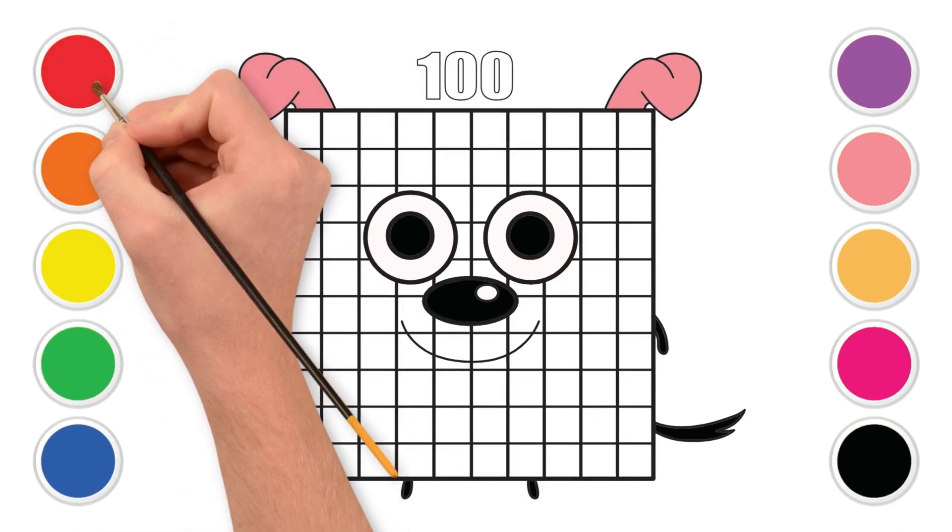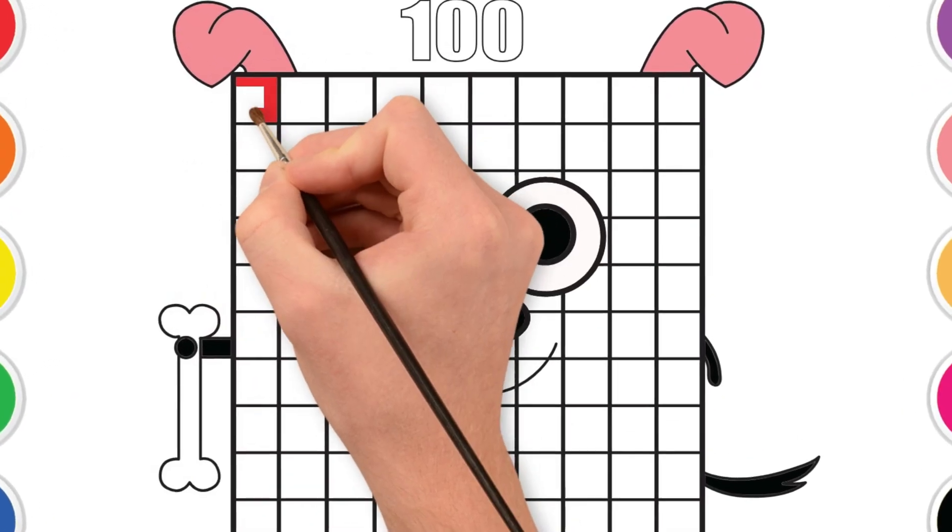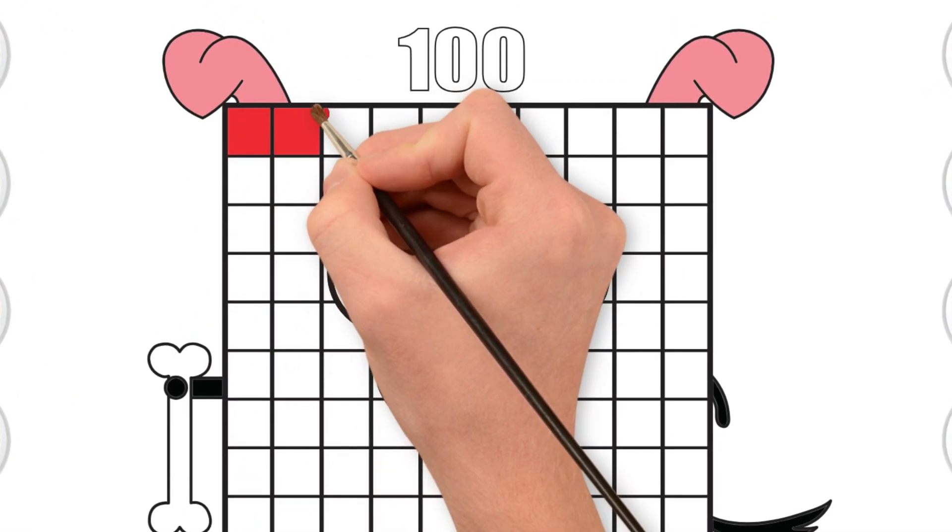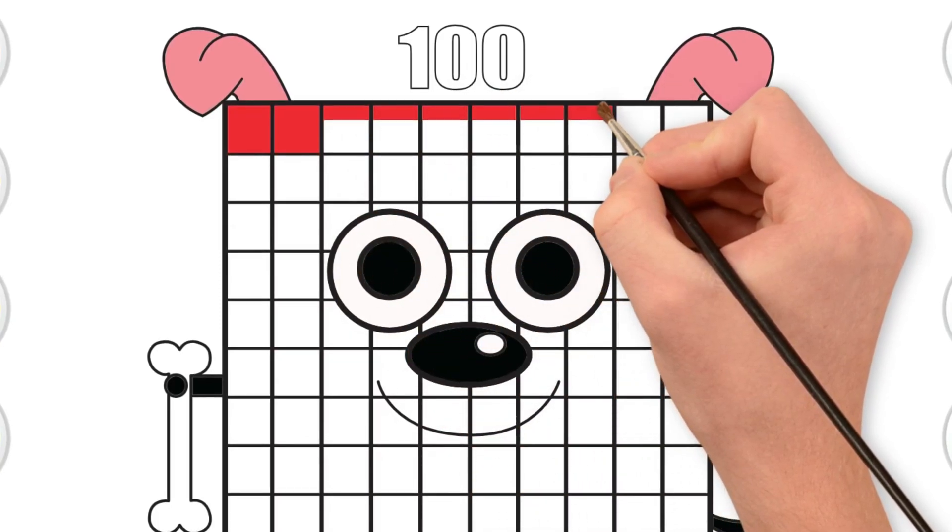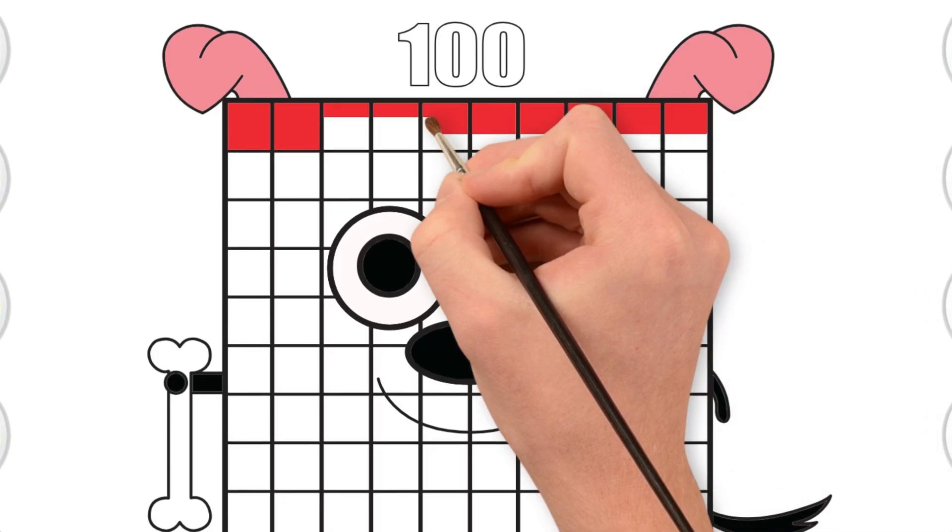Let's begin with the red. That's R-E-D. Red. Fill in the first two rows with red squares. Let's count together. One, two, three, four, five. All the way to twenty.